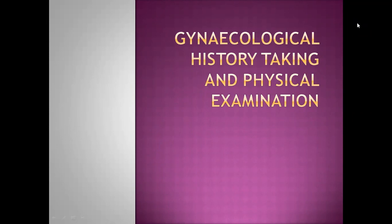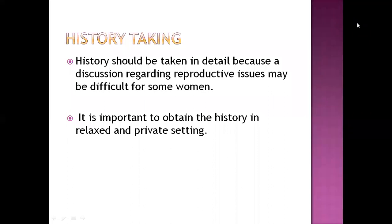First of all, history taking. History taking is a detailed information collection about a patient that we need to diagnose and treat a disease. In order to know what problems the patient is facing and the severity of those problems, we need a background of the patient — that background is history. We need to include every possible information we can use, first to diagnose the disease and then to treat it. After history, we can proceed towards physical examination.